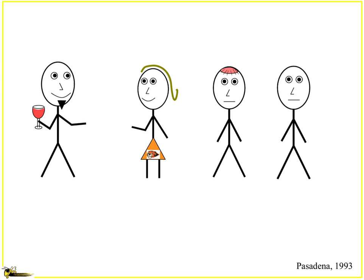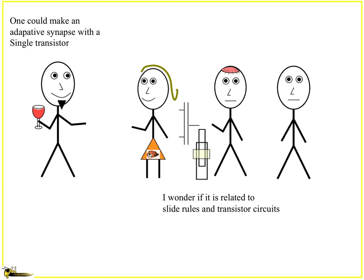That gets us to an interesting time frame, say over dinner in Pasadena in like 1993, and Carver Mead just had three of his PhD students hanging out with him. He basically made this comment like, you know, I think you could make an adaptive synapse with just a single transistor.